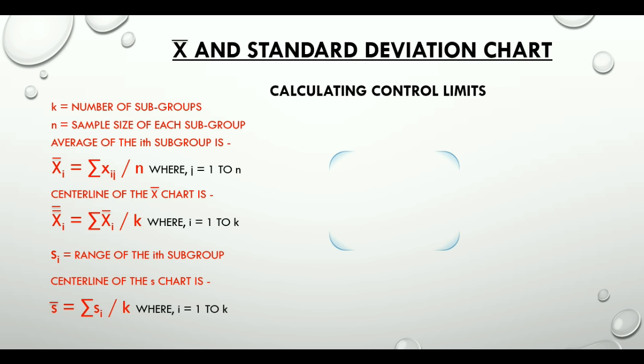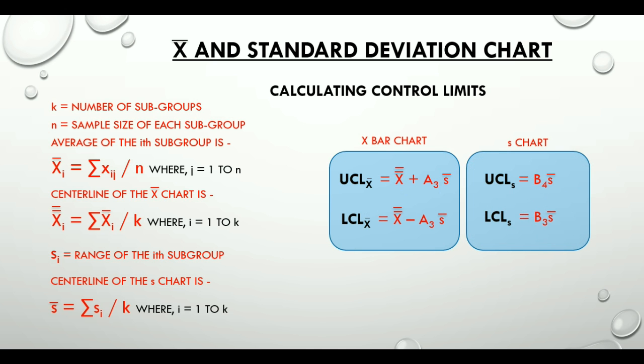Now let's look at the formulas. Here are the formulas we use to calculate the upper control limit and lower control limit for X-bar chart and then for s chart, where A₃, B₃, and B₄ are control chart constants which have table values. We can get those values from available tables for control chart constants corresponding to the sample size that we have.